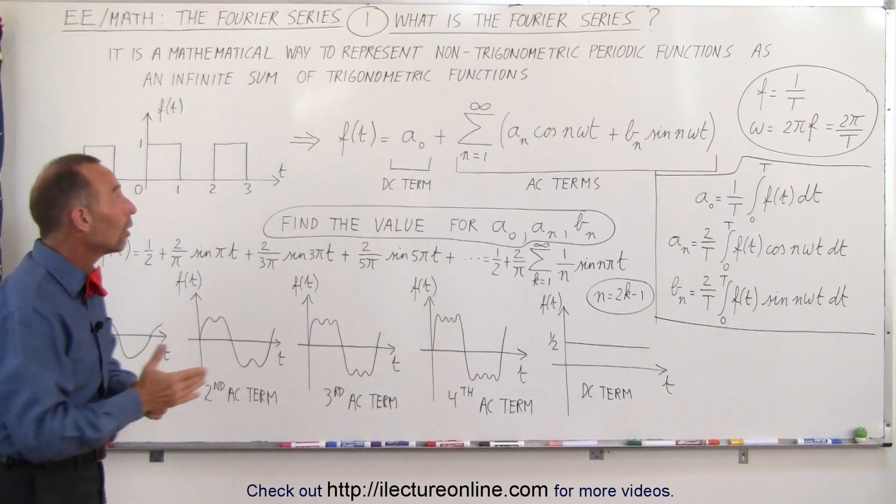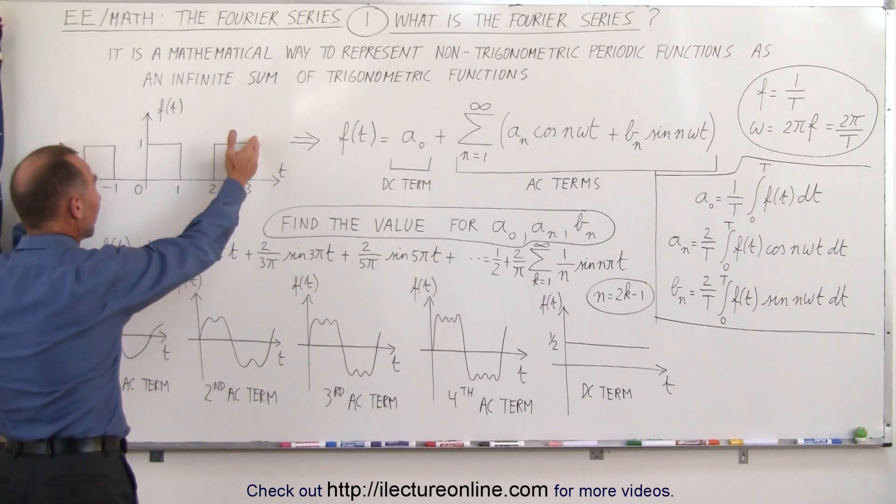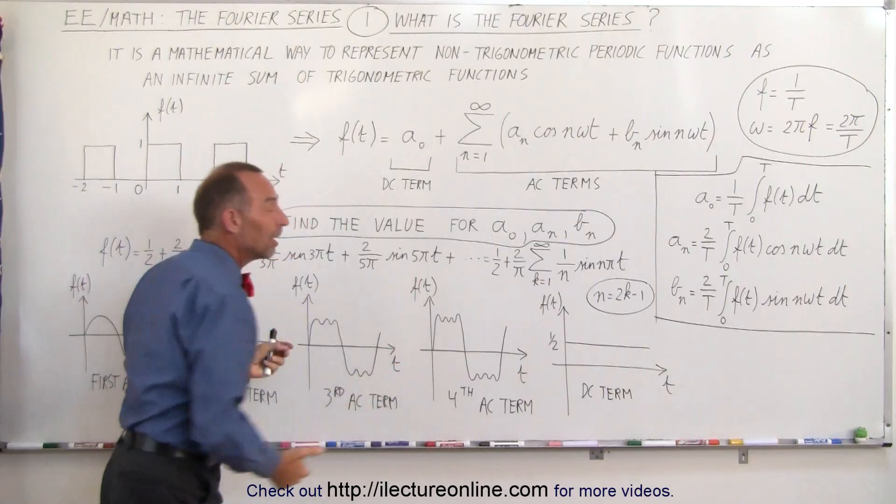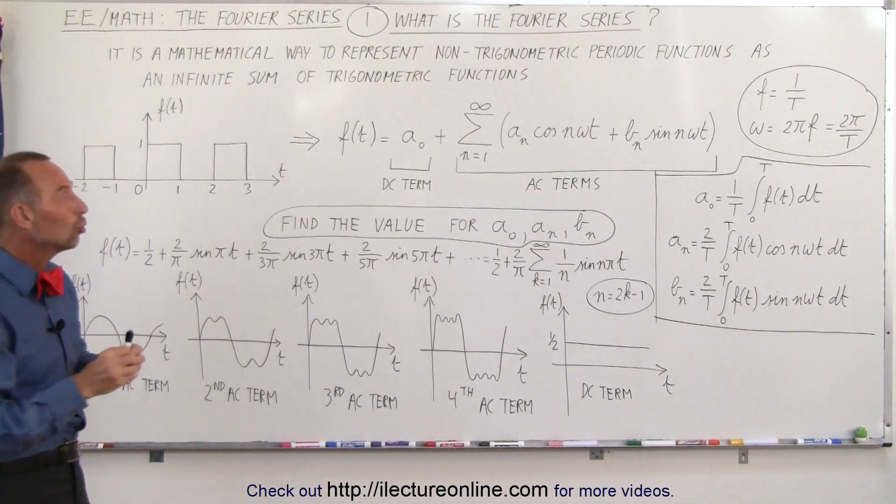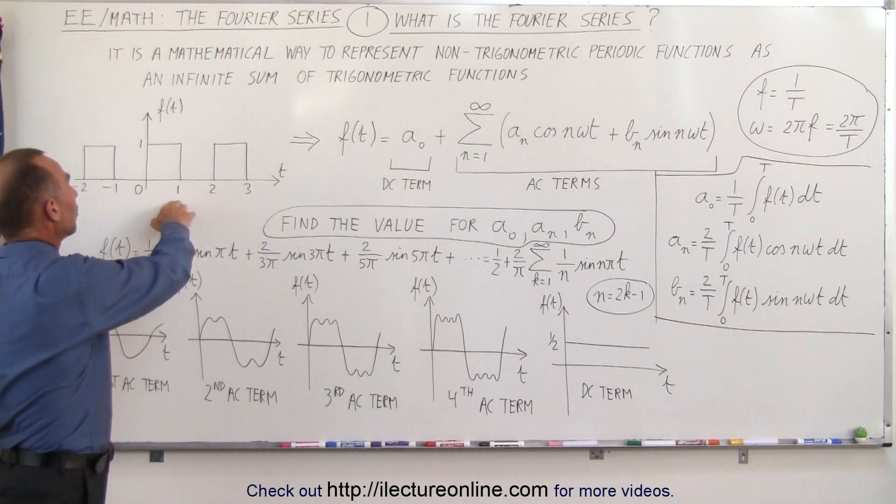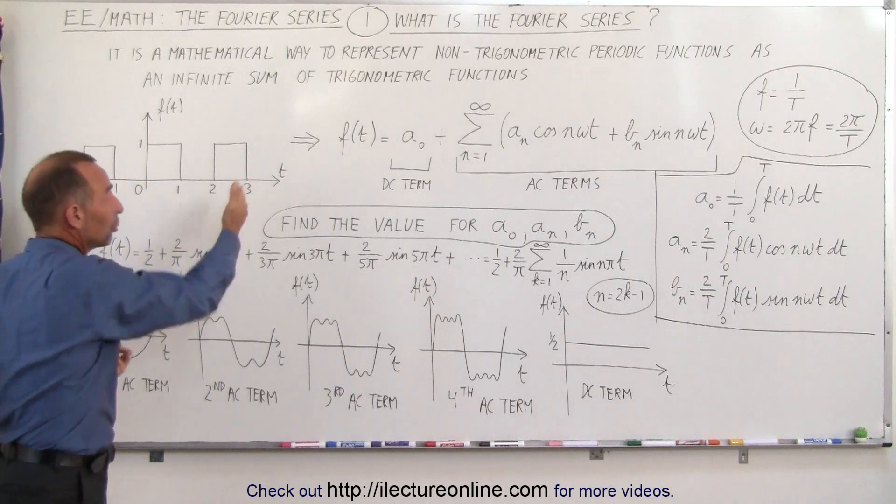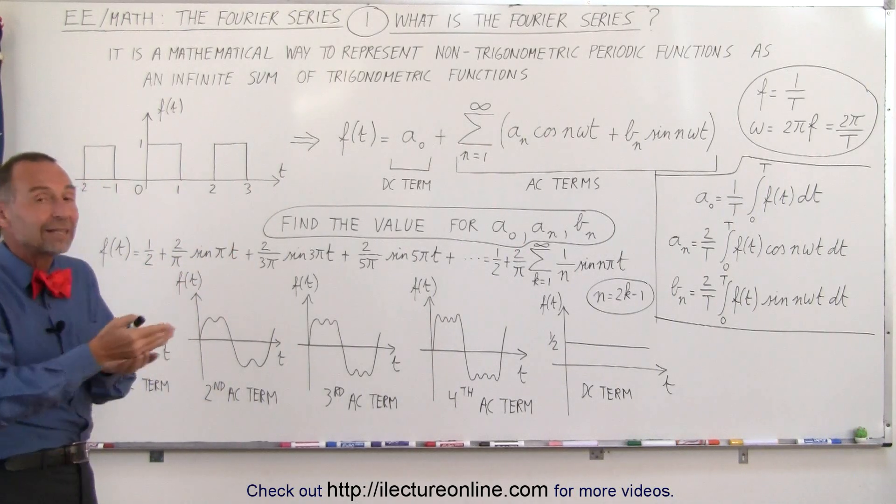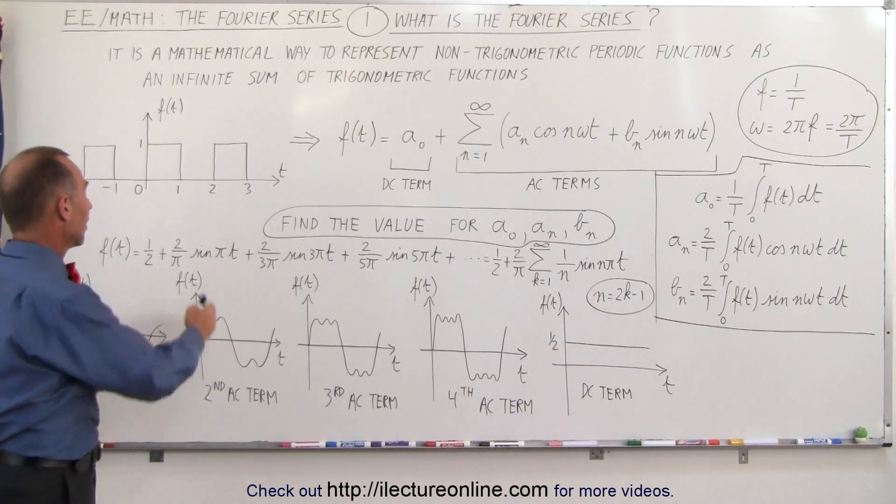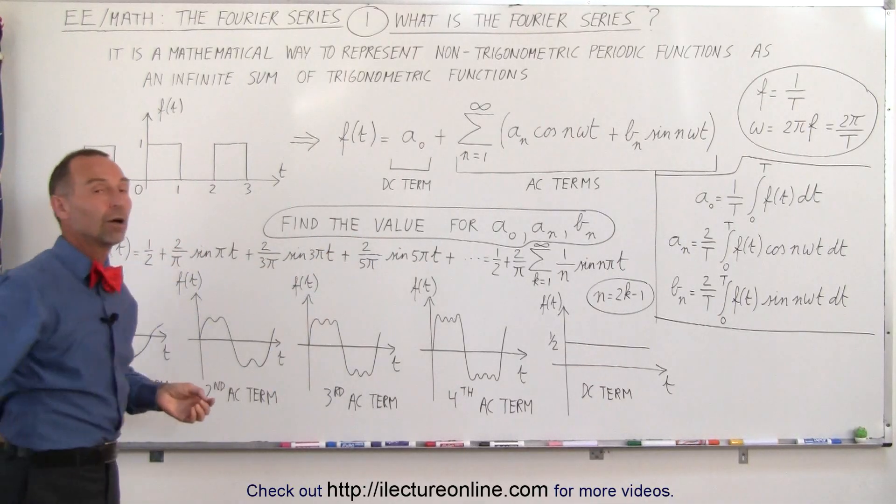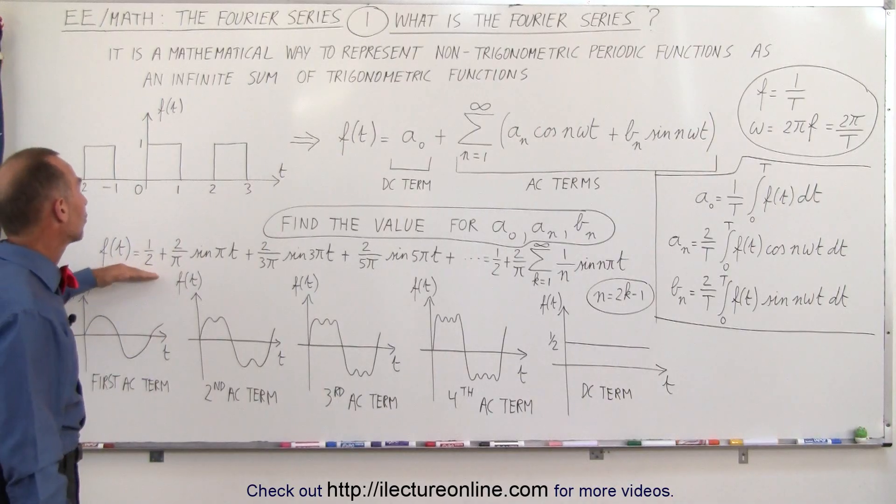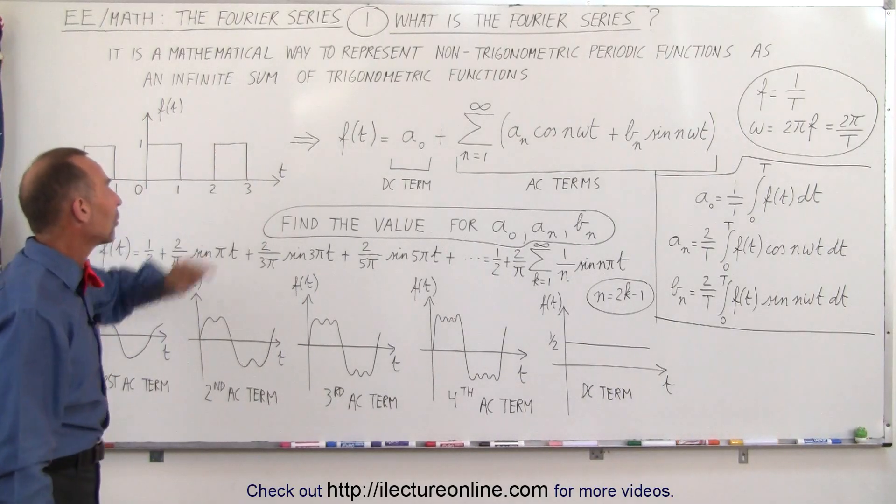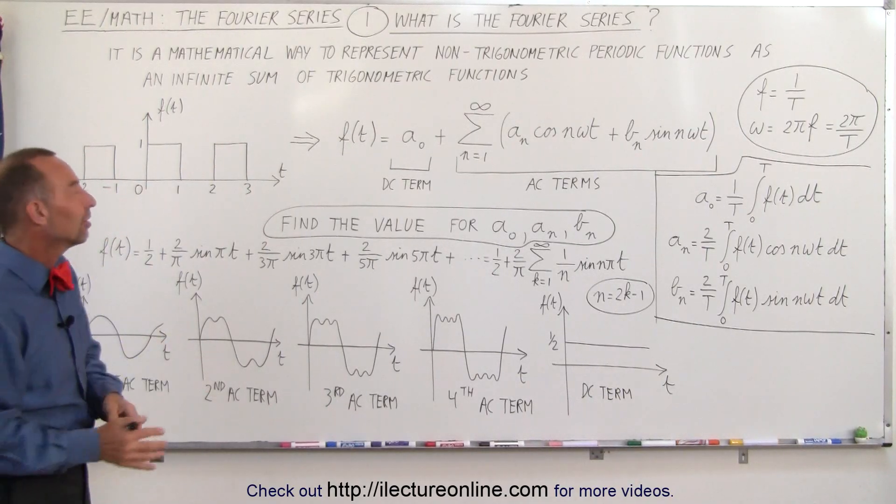But once we've done that, once we've converted this into something that looks like this, it's a lot easier to find solutions to an input. For example, if this was an input to an electronic circuit, we can then more easily find the output of the electronic circuit by utilizing this form of the input to the circuit rather than the square wave function.